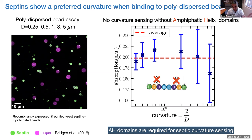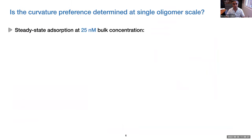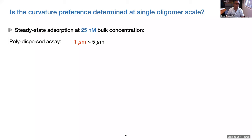The question is: if every septin comes with an AH domain, is a single septin alone sufficient to probe micron-scale curvature? Does curvature sensing occur at the single septin level or a larger scale? Some experimental information suggests it's not just a single oligomer-scale sensing mechanism.